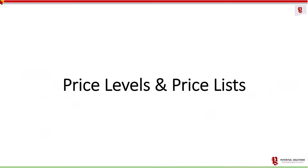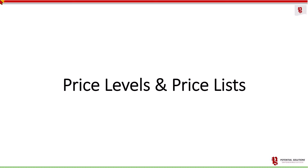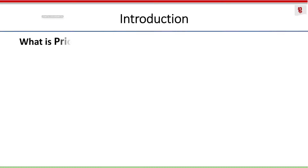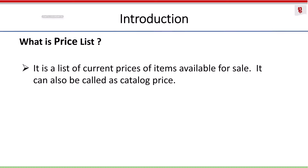Price levels and price lists in Tally Prime. First, let us understand what a price list is and the need for price lists in a business environment. What is the price list? It is a list of current prices of items available for sale. It can also be called a catalog price.